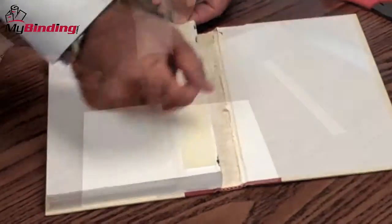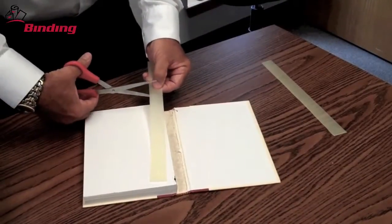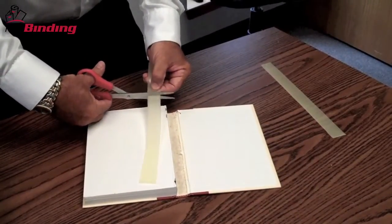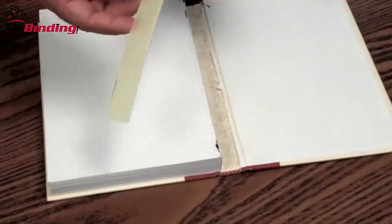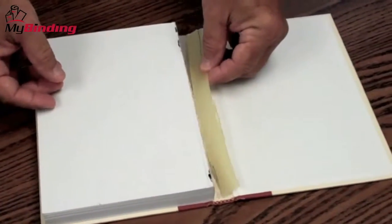First, you take one of the ProBind glue strips and cut it just a little bit shorter than the length of the book, about one-half inch on each side. Then you place that glue strip directly into the spine of the book and close it up.